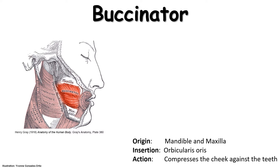Its other point of attachment is going to be the orbicularis oris. Here you can see the fibers of the buccinator as they make their way anteriorly. They're going to converge right around the angle of the mouth and they're going to insert on this muscle that encircles the mouth, known as the orbicularis oris.